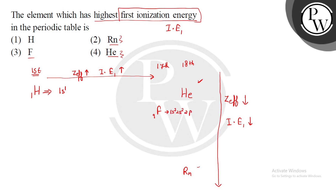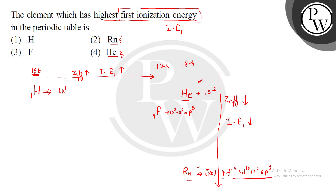Fluorine's configuration is 2s2 2p5. Helium has atomic number 2. Radon has configuration 4f14 5d10 6s2 6p6. So helium and radon have stable, fully filled electronic configurations — the noble gas configuration — which provides a stable shell arrangement.